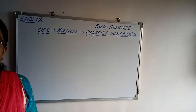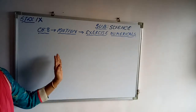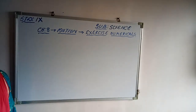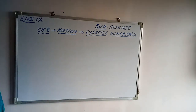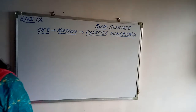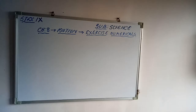Hello students, in the previous video we discussed the numericals of indexed questions. Today we are going to solve the exercise numericals. See the first question: an athlete completes one round of a circular track of diameter 200 meters in 40 seconds. What will be the distance covered and the displacement at the end of 2 minutes 20 seconds?